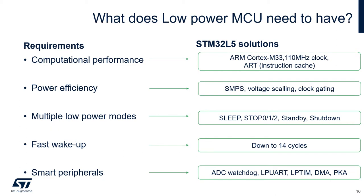Once we are familiar with the profile of a typical low power application, let's identify the list of requirements for an ultra-low power MCU and speak about solutions on STM32 L5. The first requirement for an MCU is computational performance. This feature allows faster task execution in the active phase and reduces the time spent on it. To address this, STM32 L5 offers a performant Cortex-M33 core, system frequency of up to 110 MHz, and the ART accelerator — a cache memory that speeds up execution.